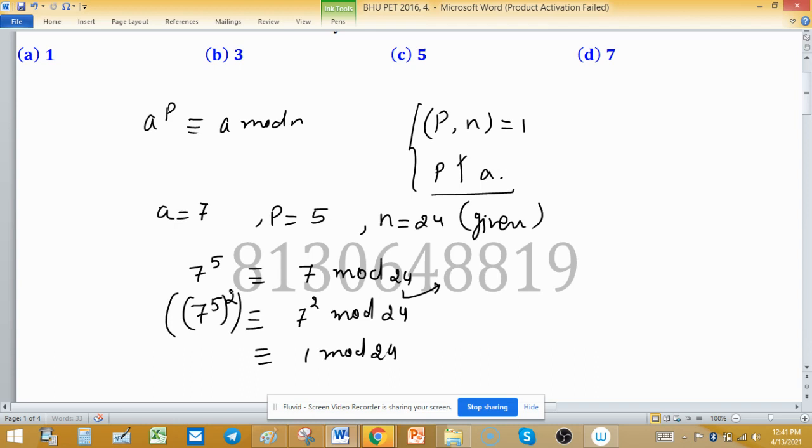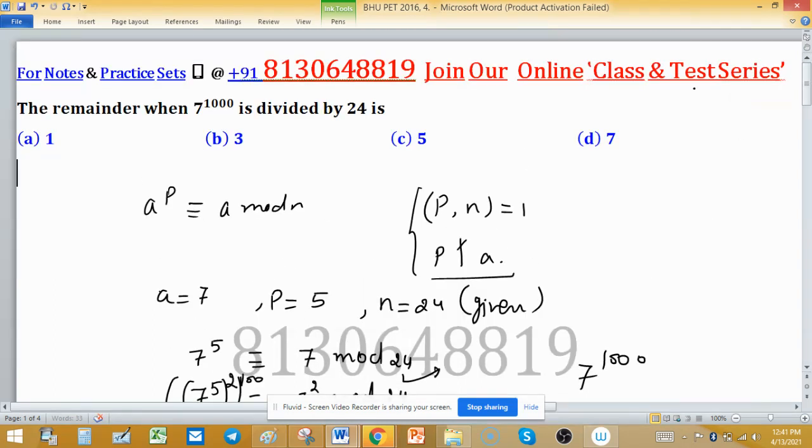So 5 times 2 is 10 and we need 7 raised to the power 1000. So make 100 here. So 1 raised to the power 100 gives you 1 mod 24, means the remainder is 1. So which option is giving value 1, that option is correct.